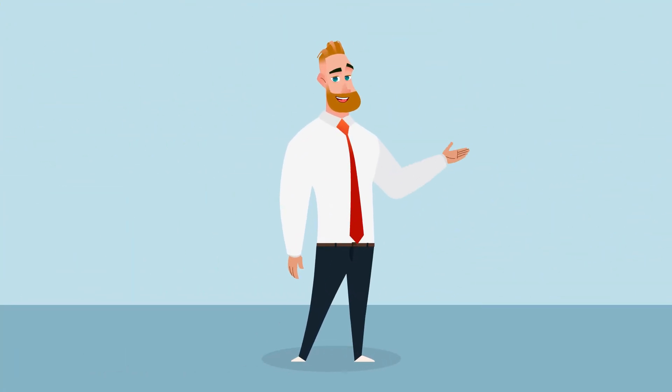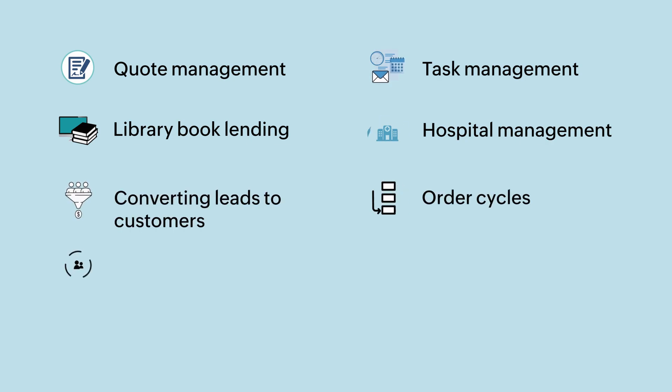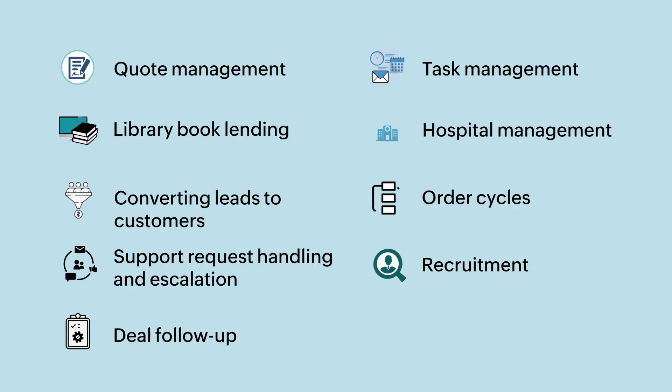Here are some business scenarios where you can use Blueprint to automate your business processes: quote management, task management, library book lending, hospital management, converting leads to customers, order cycles, support request handling and escalation, recruitment, and deal follow-up. And that's just the tip of the iceberg.